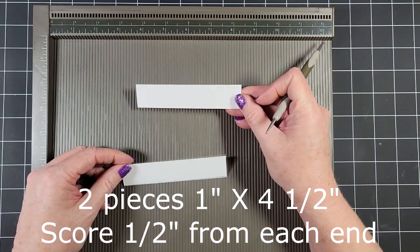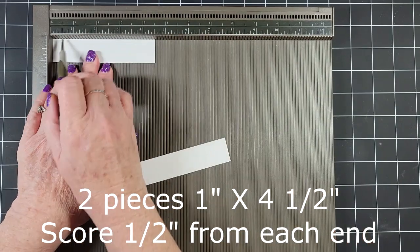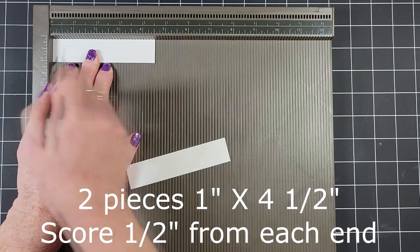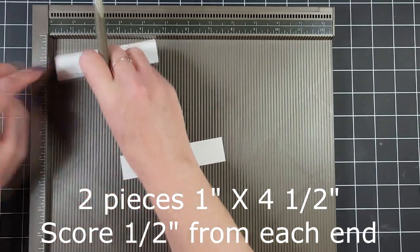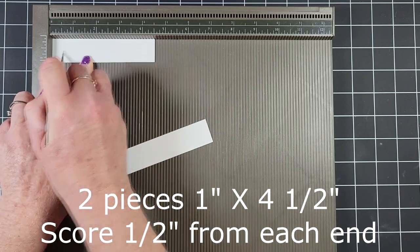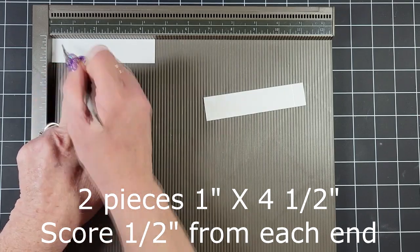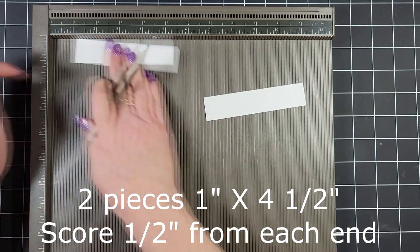Next, I'm going to bring in two pieces of white cardstock measuring one inch by four and a half inches. And we're just going to score half an inch from each end. So score it at half an inch, flip it around, and then score at a half inch again. These are going to be the pillars for our stage, if you will.